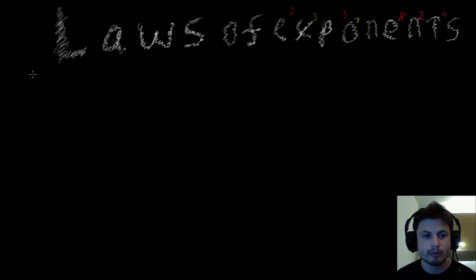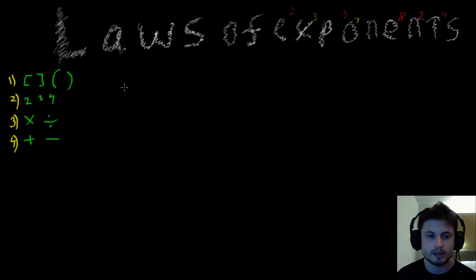If we actually rewrite them right here on the side, we have brackets first, exponents next, then we have multiplication and division, and then we have addition and subtraction. So we have our order of operations right here.